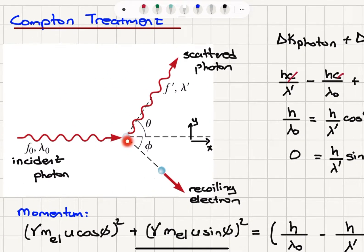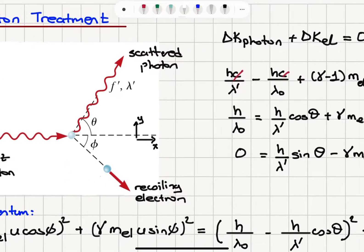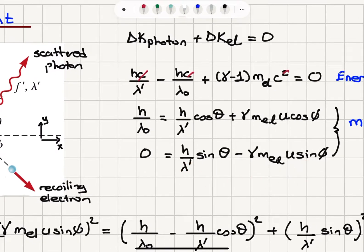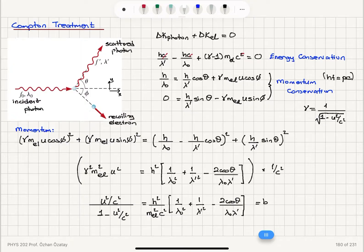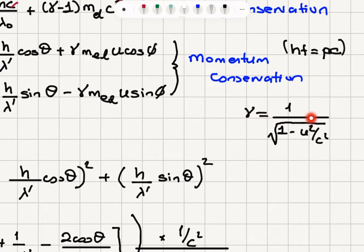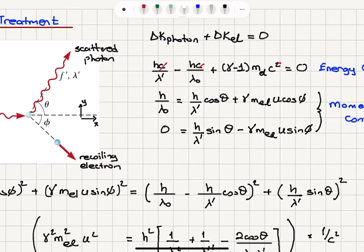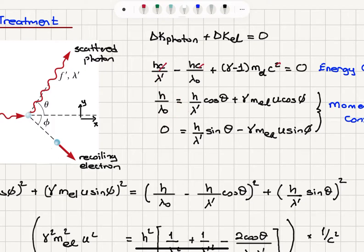For momentum conservation on the y-axis, because the incoming photon has no y-component, h over lambda prime sine theta in the positive y-direction is the scattered photon's y-component, and gamma mu sine phi is in the minus y-hat direction. So they should add to zero. Gamma, our relativistic correction factor, is 1 over square root of (1 minus u squared over c squared). This completes our analysis of elastic scattering, assuming photons carry energy hc over lambda and momentum h over lambda.